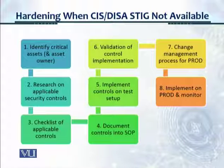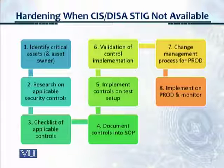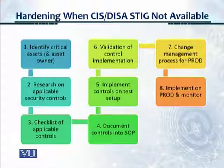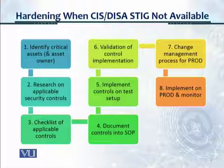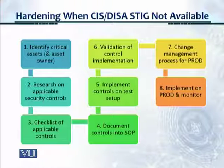This graphic shows the eight-step security control implementation methodology, or hardening methodology. Step one: identify the critical assets. Step two: research the applicable security controls. Even when a CIS or DISA STIG is available, we were still doing that research just to get a feel, make sure we're not missing anything, and get our bearings correct — always doing step two in the eight-step methodology for security hardening.